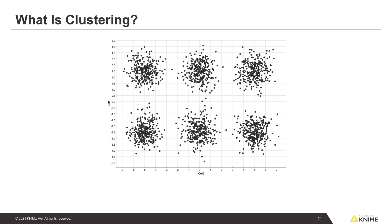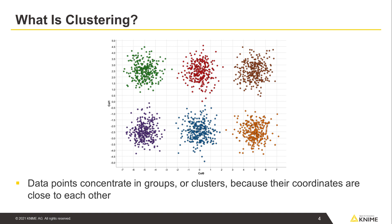So what is clustering? To explain, let's take a look at this scatterplot. As you may notice, data points seem to concentrate into distinct groups. To make this obvious, we show the same data but now data points are colored.